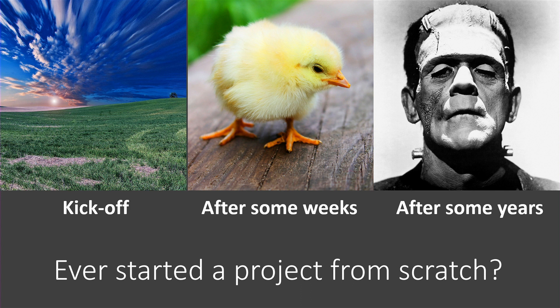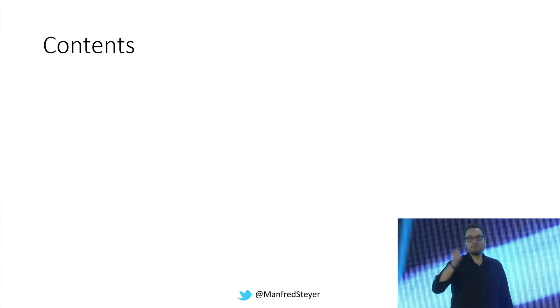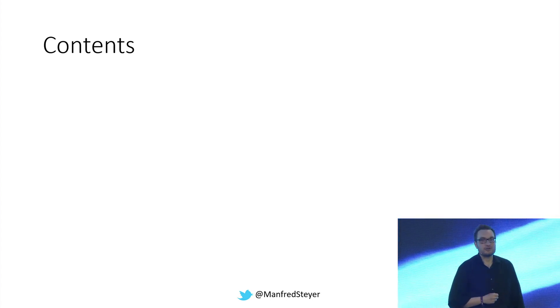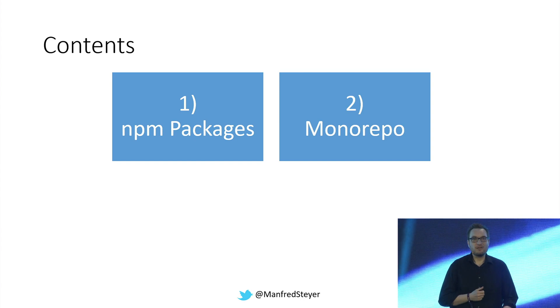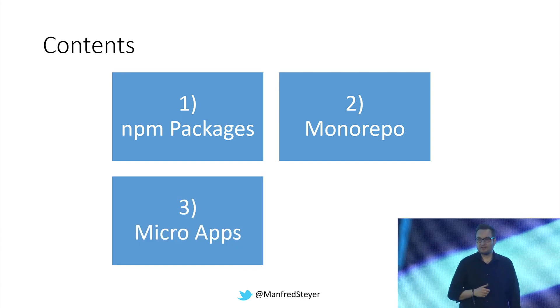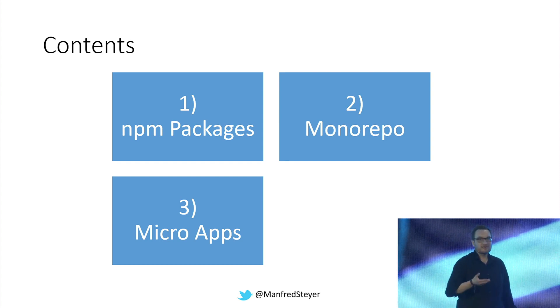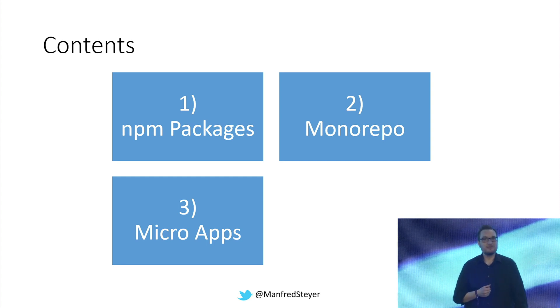This is the Frankenstein monster — assembled from different body parts of different dead people — and this is exactly what happens to software. You are integrating one use case after the other, one technology after the other, and you end up with a non-testable, non-predictable Frankenstein monster. In this talk I will show you three approaches to avoid this using Angular: the first is about NPM packages, the second is about the monorepo, and the third is about micro apps — the answer to microservices in the front end.